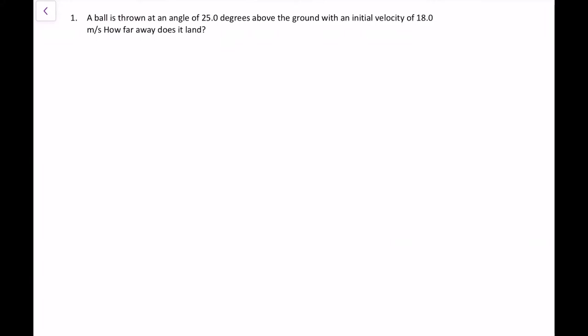Okay, so the first question we're going to look at here is a projectile motion question. It says that we've got a ball thrown at an angle of 25 degrees above the ground with an initial velocity of 18 meters per second, and how far away does it land? I always like to start every question with a little diagram. So we've got a ball traveling at 18.0 meters per second, and it is at 25 degrees above the ground.